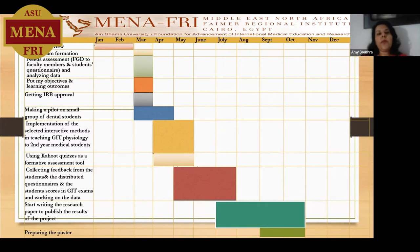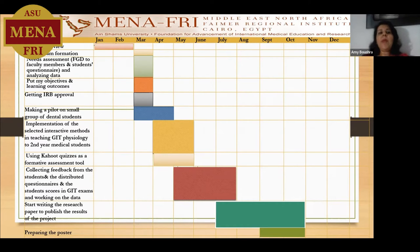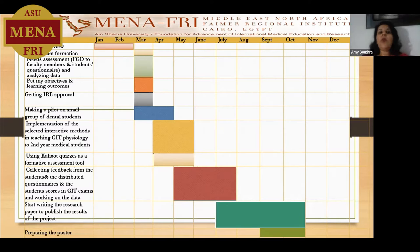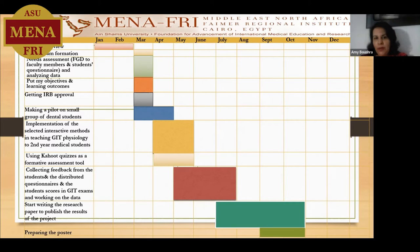My gunshot was as follows. Literature review was in January and February — I read a lot of papers. Then I started in March to form my project team, conducted a focus group discussion with faculty members of my department, and distributed questionnaires to students to assess the needs. Based on that, I put my objectives and learning outcomes, then got my IRB approval.